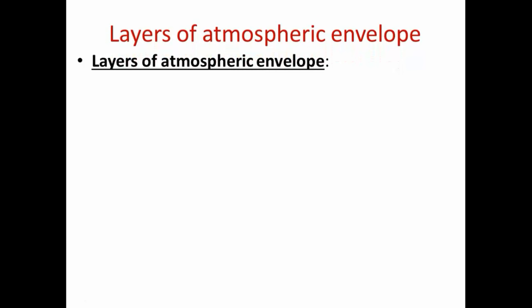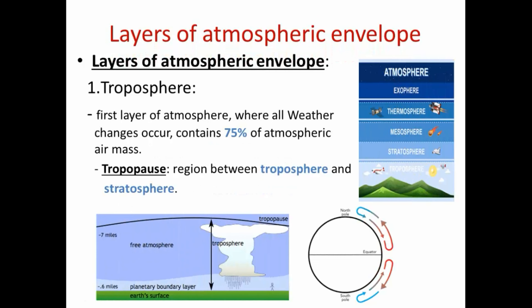The first layer is the troposphere, and it is said to be the most disturbed layer, as all atmospheric changes like storms, winds, rains, and lightning all occur in it. It is the first layer of atmosphere where all weather changes occur. It contains about 57% of atmospheric air and contains more than 90% of water vapor.